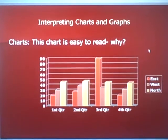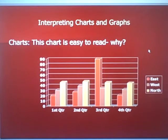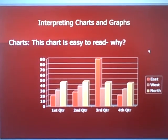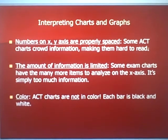This is Part 2 of our science ACT test prep. As I mentioned in the first video, science is really about interpreting charts and graphs. We have a chart here that I think is pretty easy to read, and I'd like you to think about why. The numbers on the x and y axis — the horizontal and the vertical — are spaced out properly, so we can see them easily.